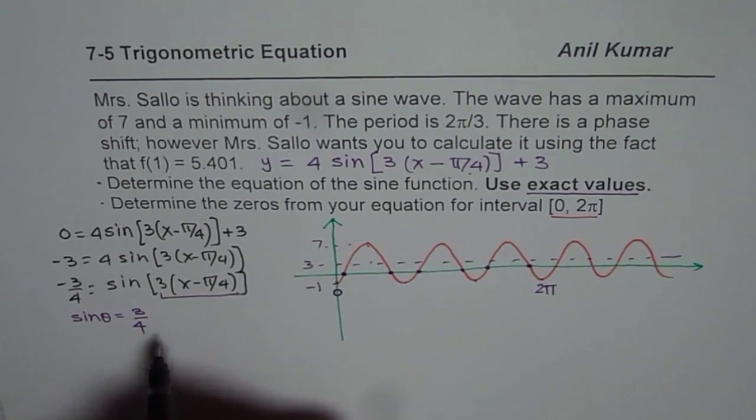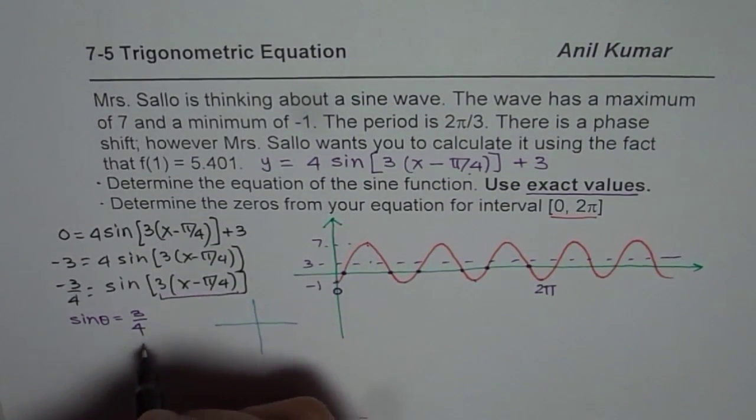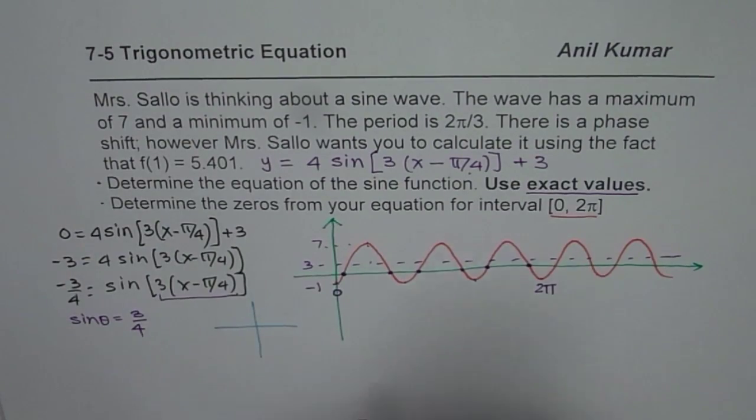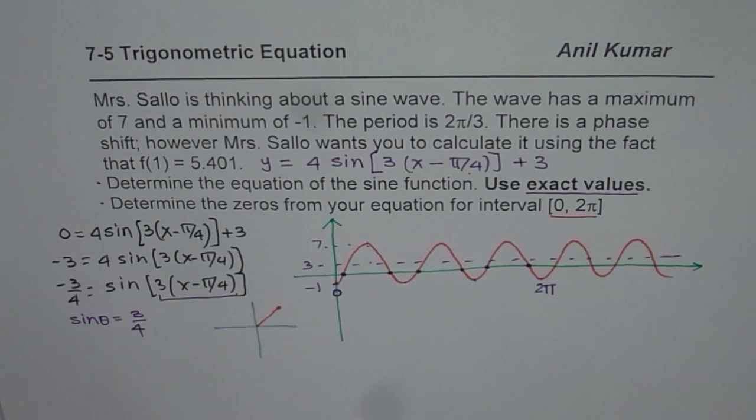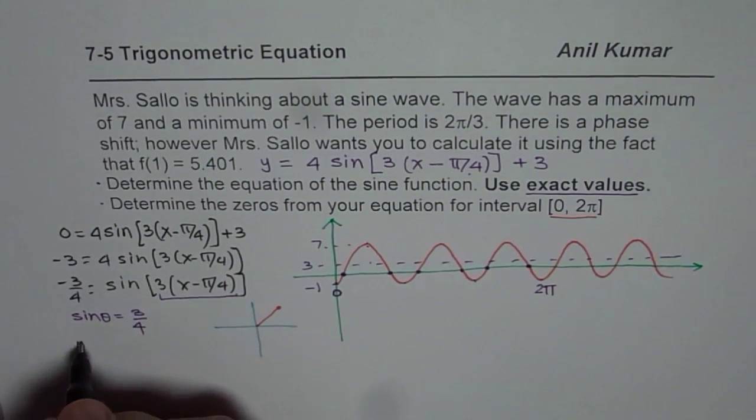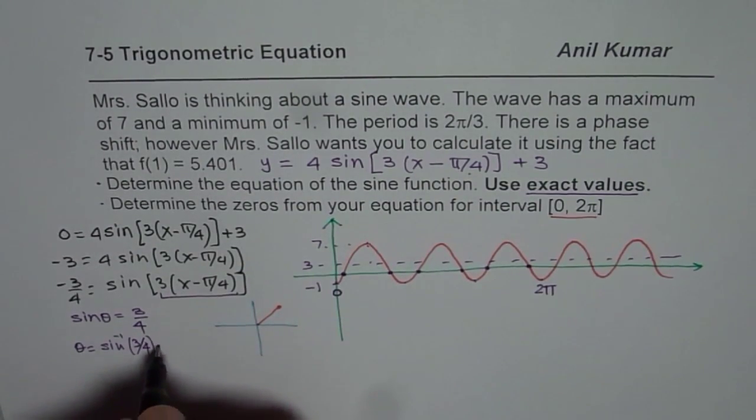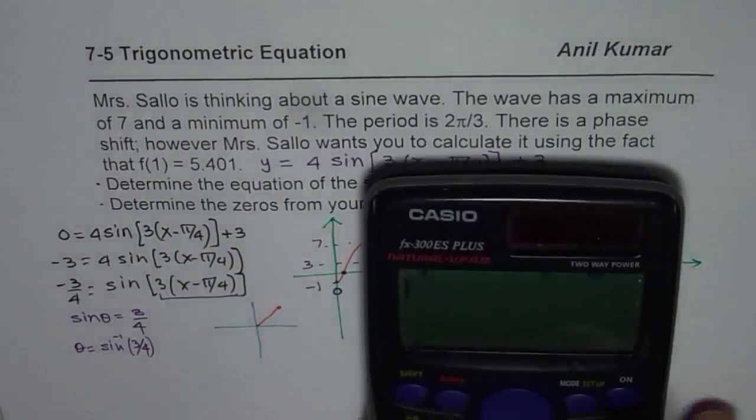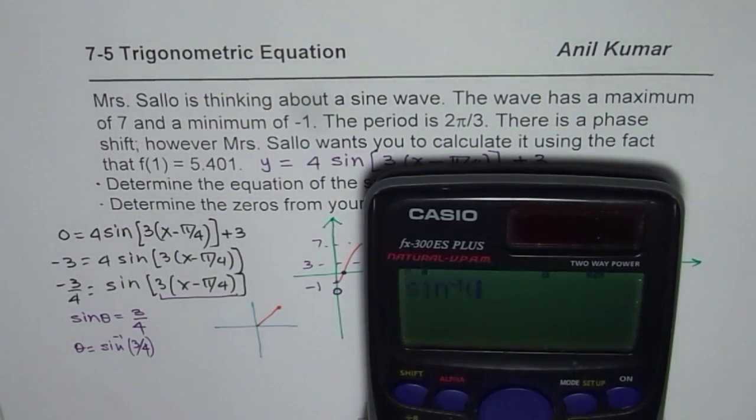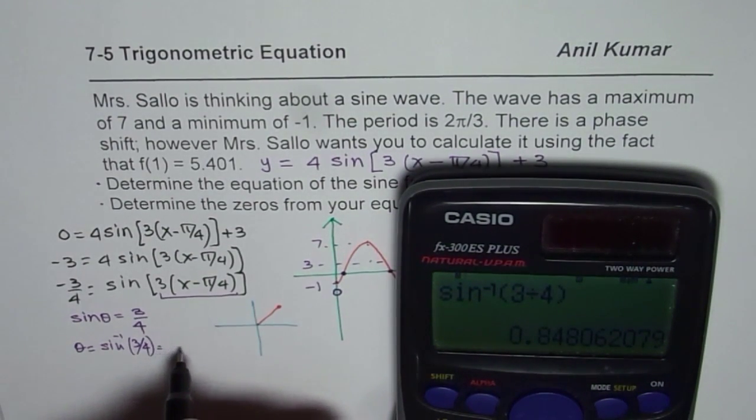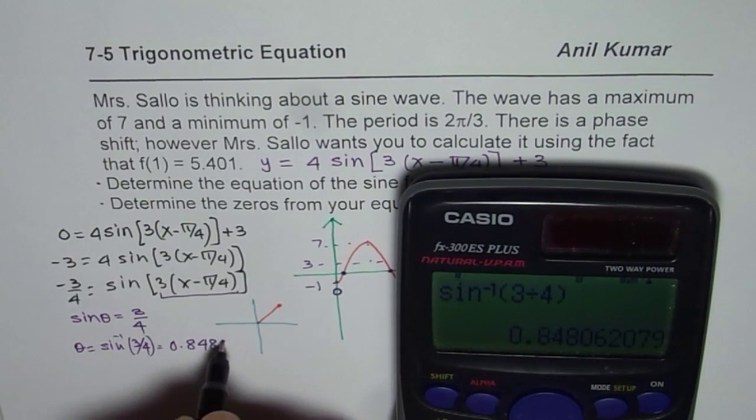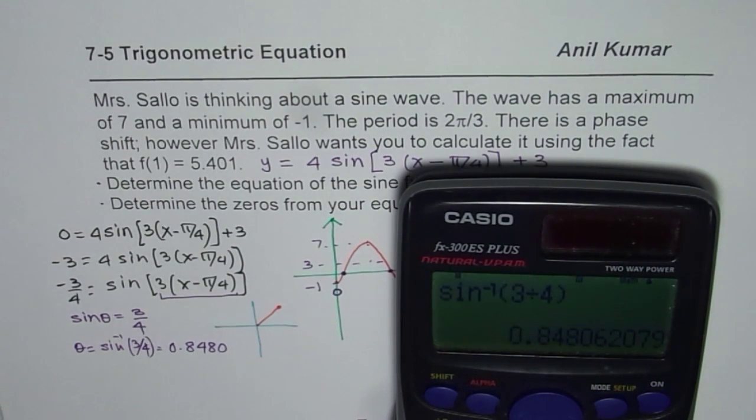So we will find acute angle which is going to give us 3/4. So we are looking for a solution which will be in quadrant 1. So we say sine theta = 3/4 means theta = sin⁻¹(3/4). You need to use calculator at this stage. So we have sin⁻¹(3/4) = 0.8480. So 4 decimal places is something which is recommended.